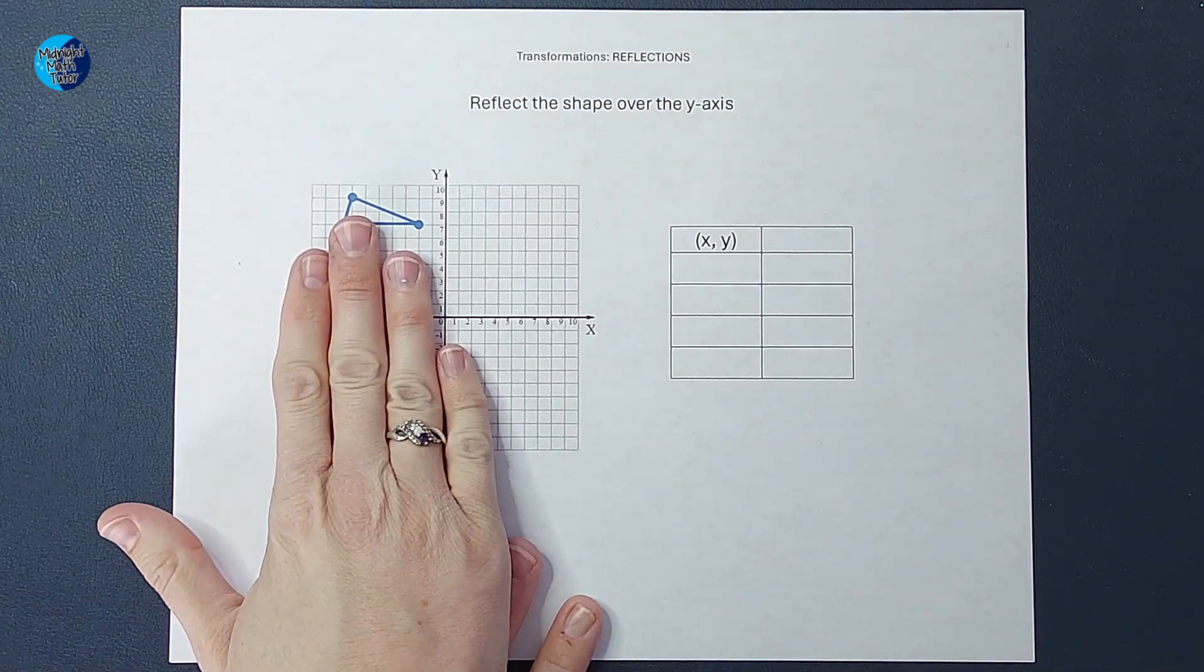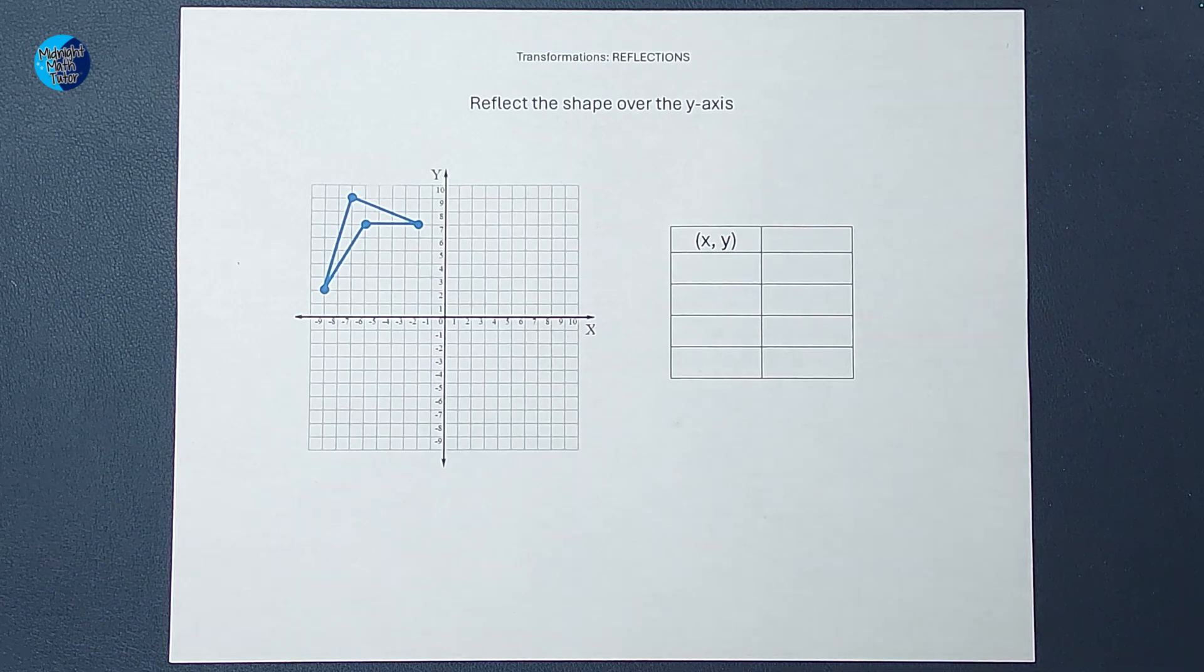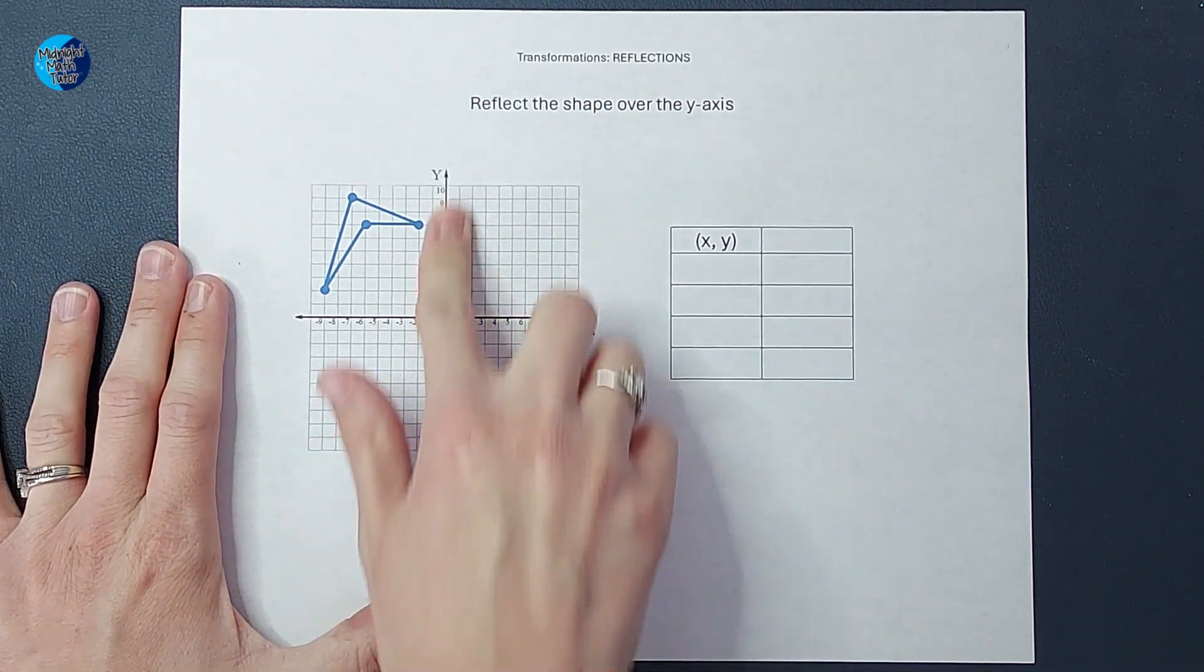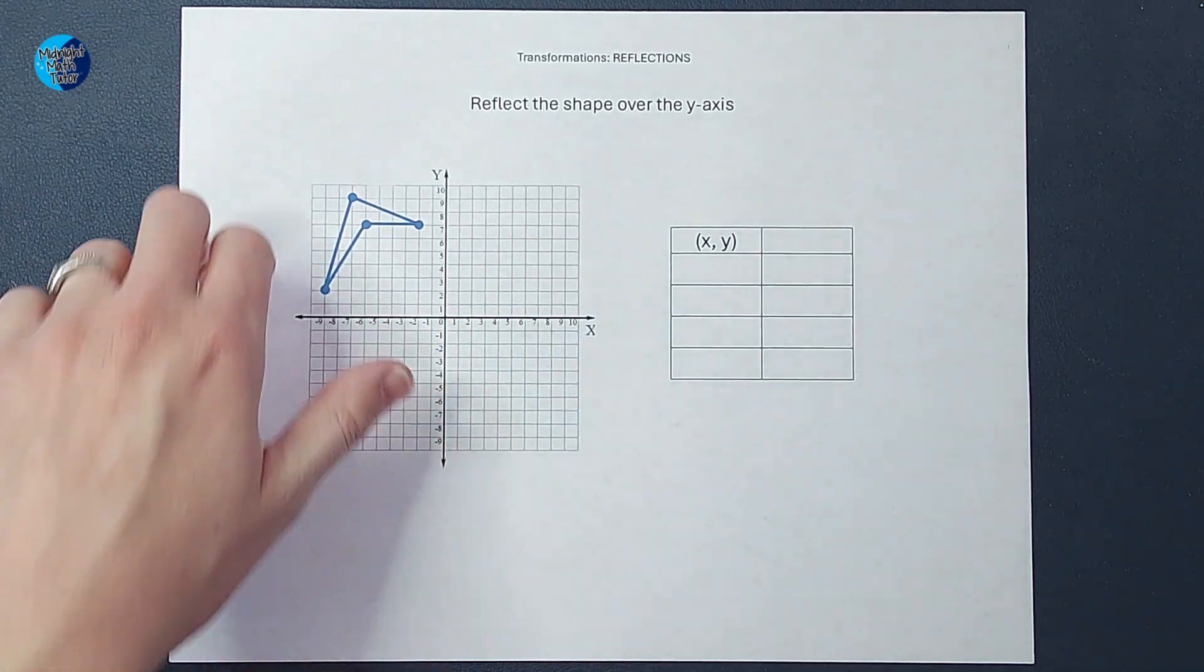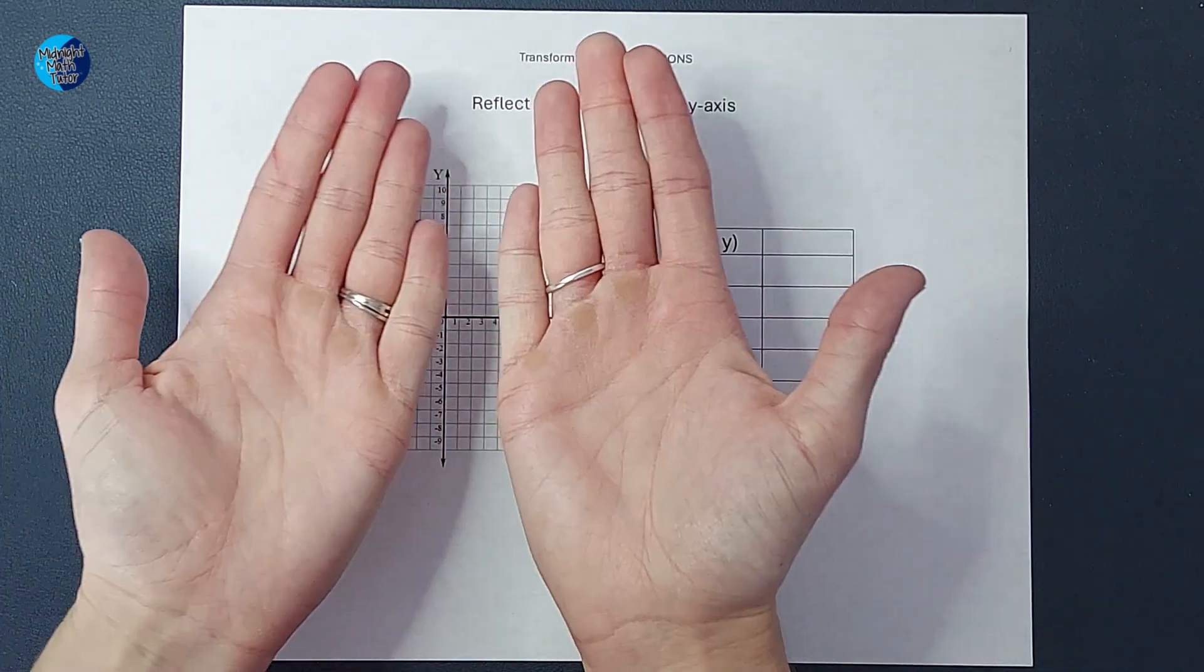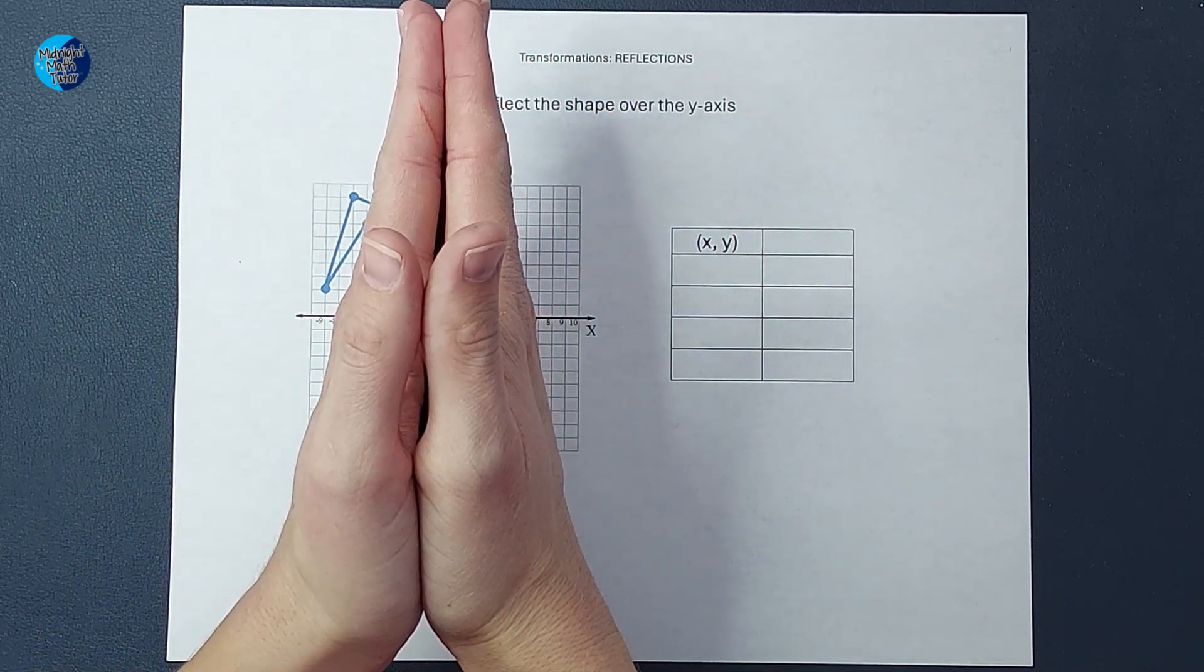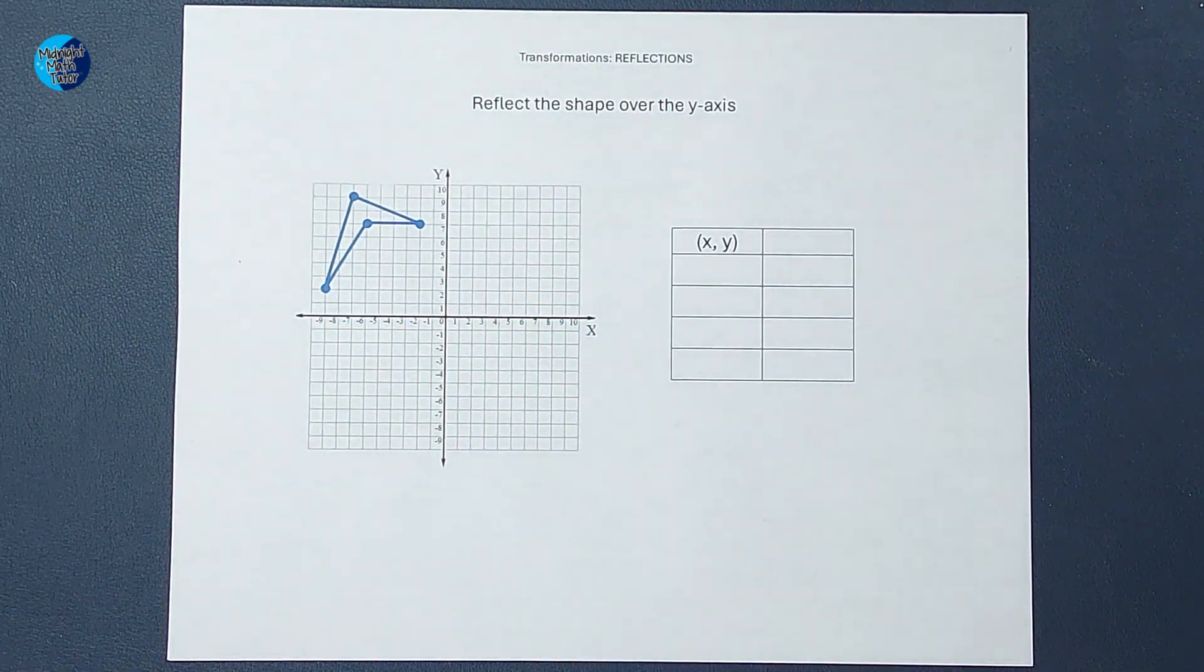We want to take this shape and reflect it over the y-axis. There's kind of two ways I like to think of reflecting. One is if this y-axis were a mirror, what this shape would look like on the other side. The other way I like to think of it is if this shape was like wet paint or a stamp and I were to fold this across or along the y-axis and unfold it, what the shape would look like on that side.